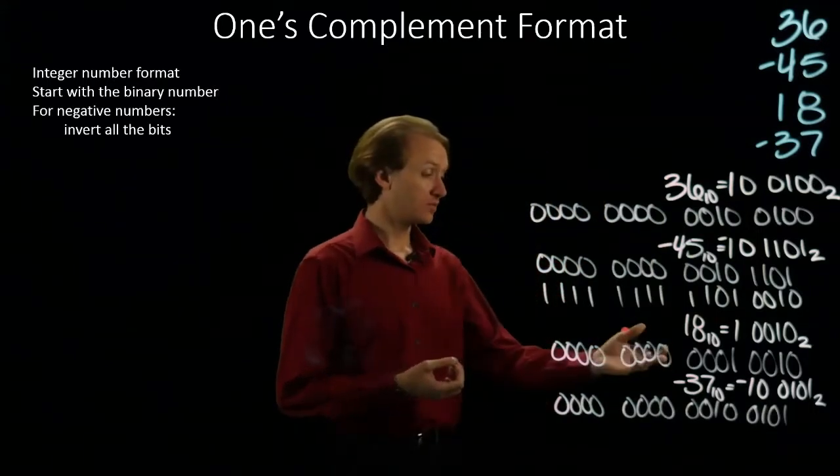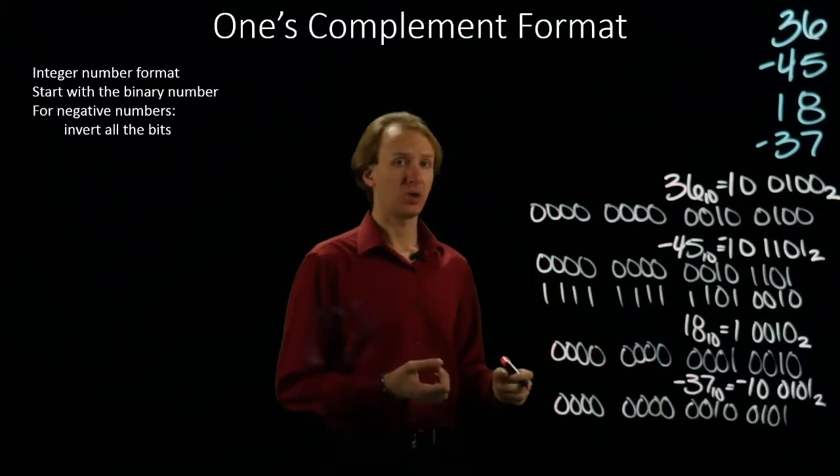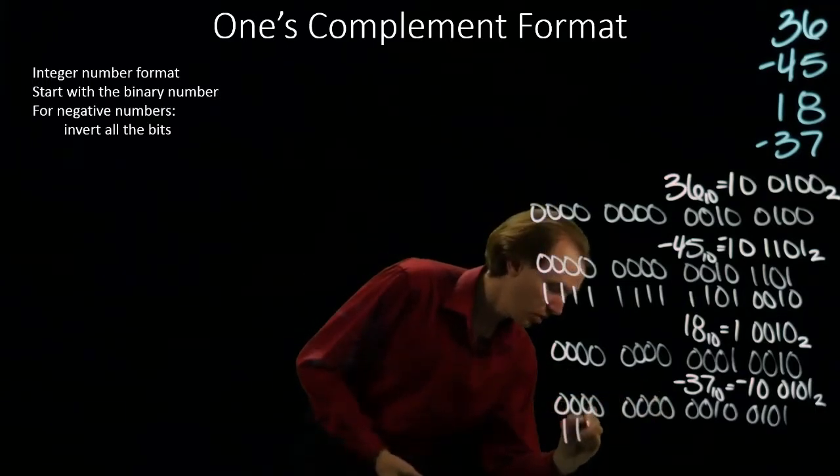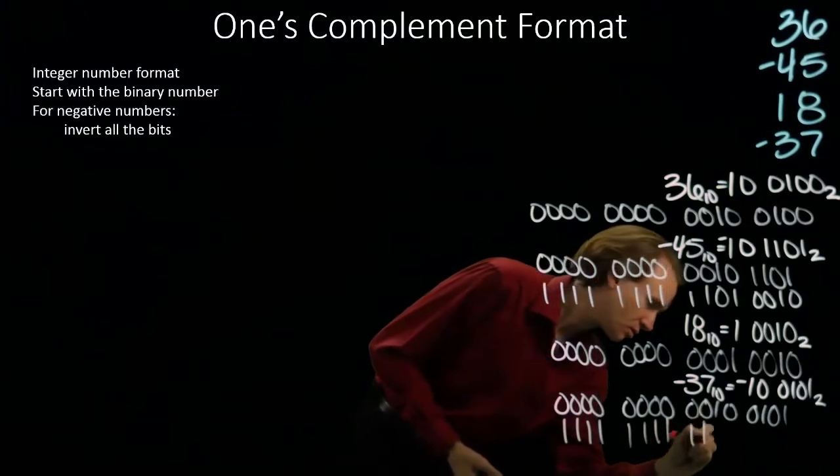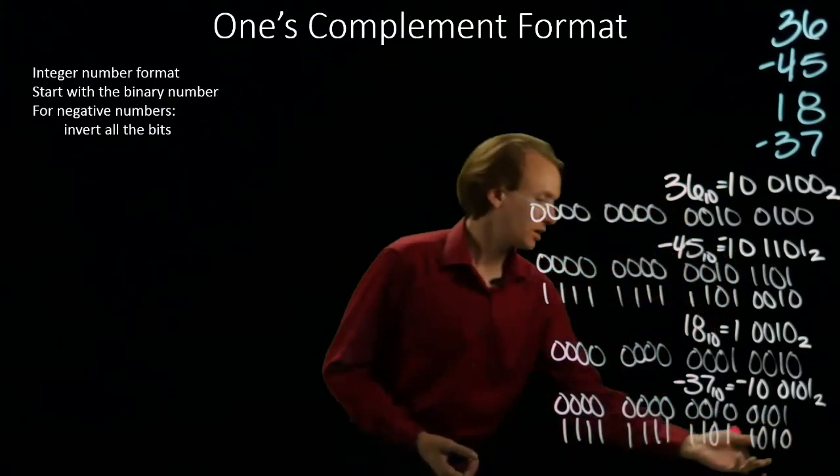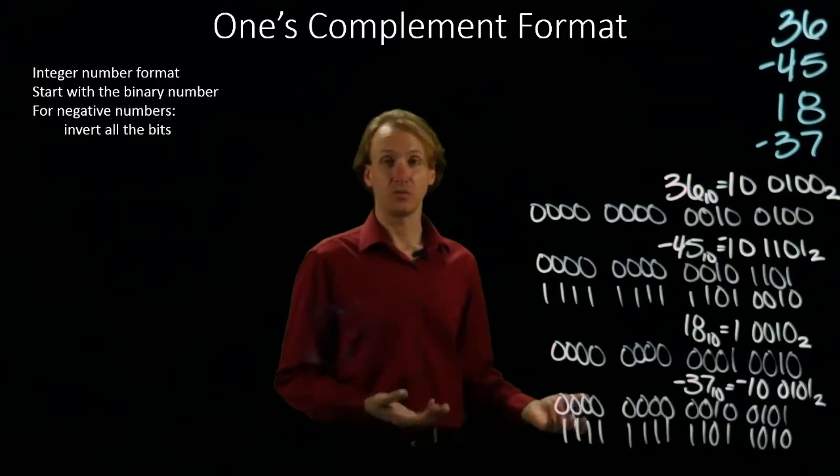Now, since I want negative 37, I'm going to apply the one's complement operation to this. So I will flip all of these bits. And now I have negative 37 in one's complement.